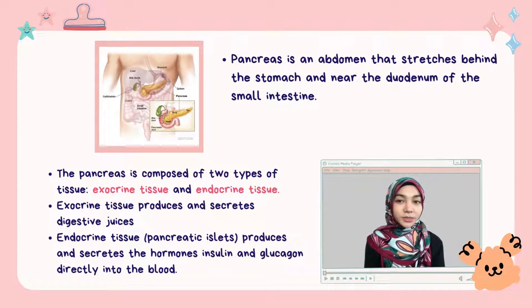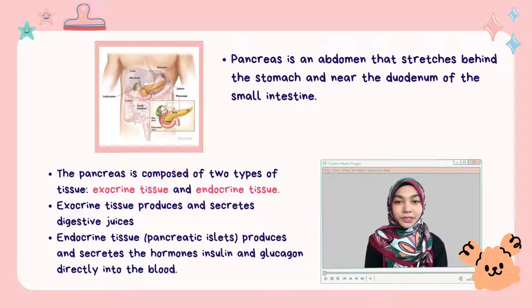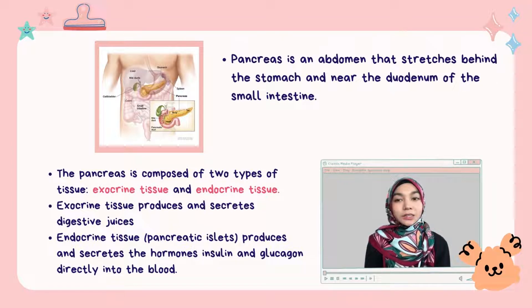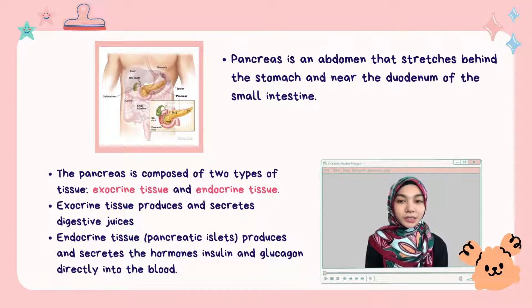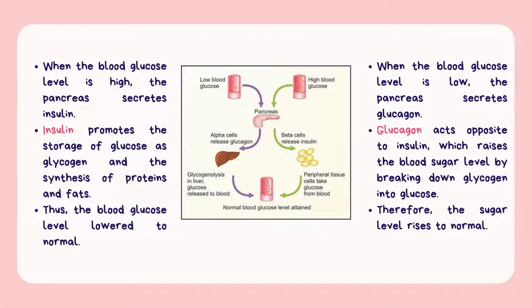The pancreas is an organ in the abdomen that stretches behind the stomach near the duodenum of the small intestine. It plays an important role in converting food into fuel for the body's cells. The pancreas is composed of exocrine tissue, which produces and secretes digestive juices, and endocrine tissue, which produces and secretes the hormones insulin and glucagon directly into the blood. When blood glucose is high, the pancreas secretes insulin, which promotes the storage of glucose as glycogen and the synthesis of proteins and fats, lowering blood glucose to normal.